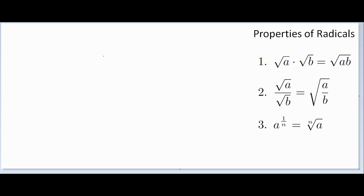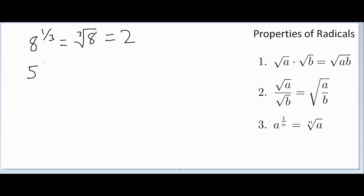The third property relates how a fractional power is equivalent to a root. For example, 8 to the 1/3 is the same as the cubed root of 8, which is 2; and 25 to the 1/2 is the same as the square root of 25, which is 5. You can convert either way — from a fractional exponent to a radical or from a radical to a fractional exponent.